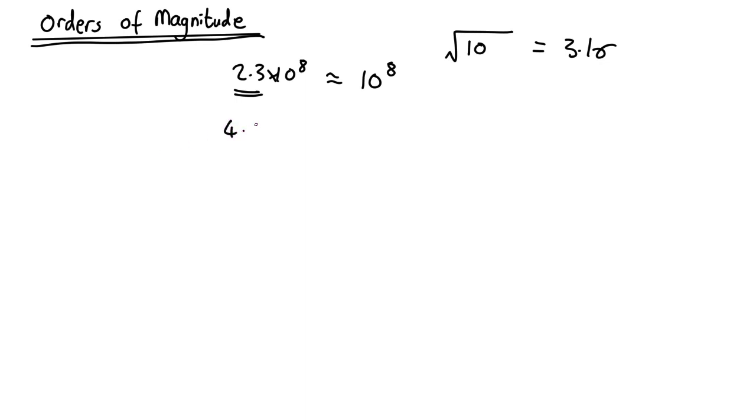On the other hand, 4.5 by 10 to the minus 3, 4.5 is more than this, so that would round up. So that would come out as about 10 to the minus 2.